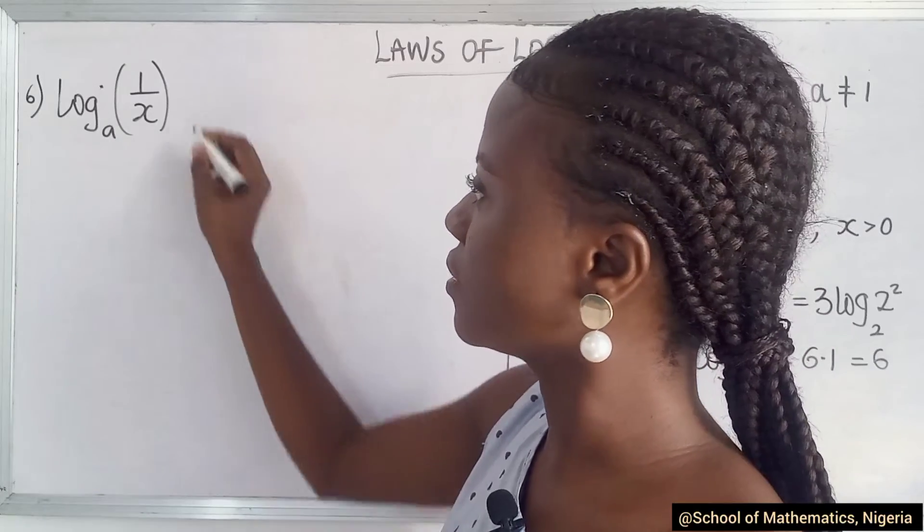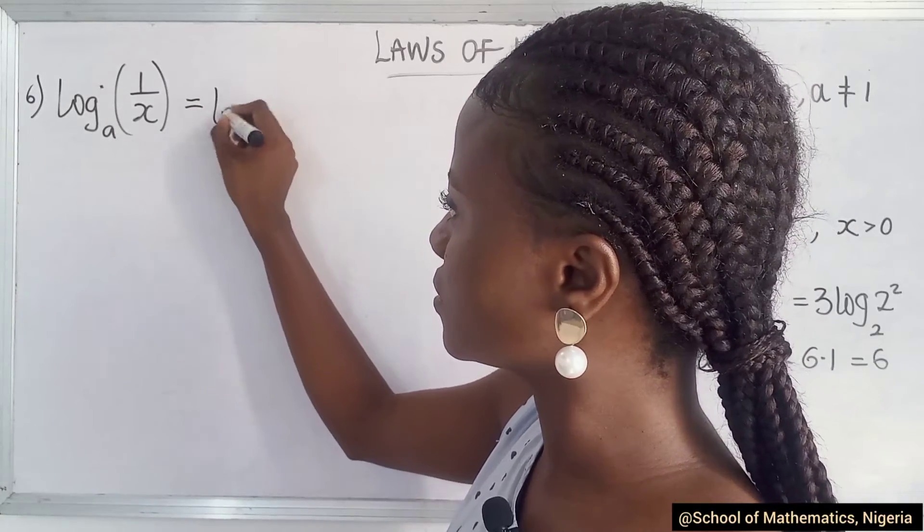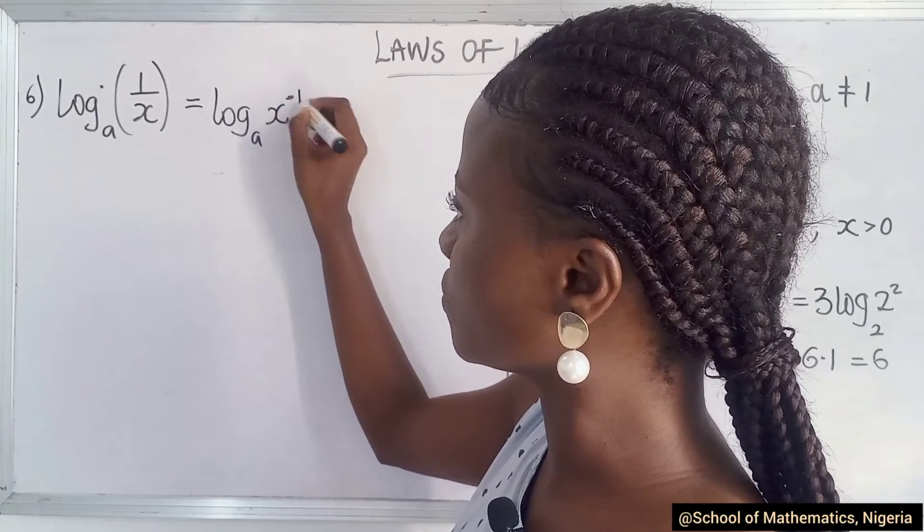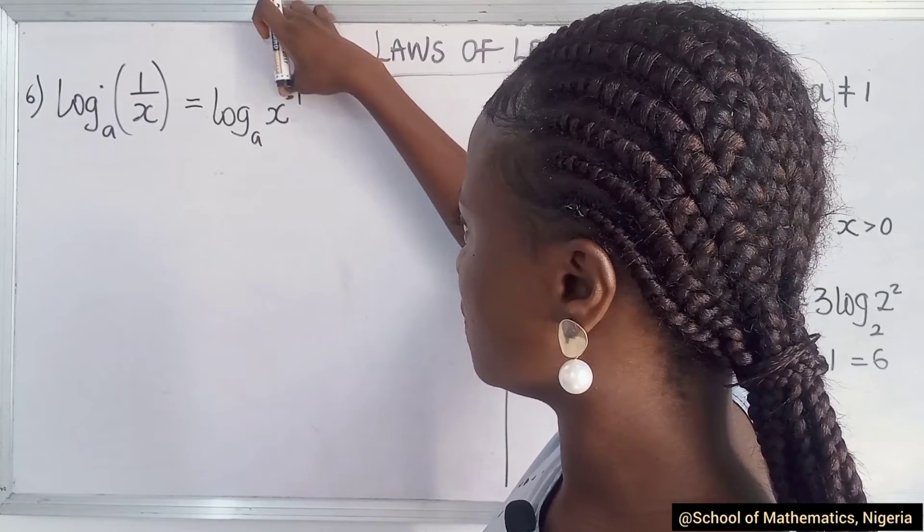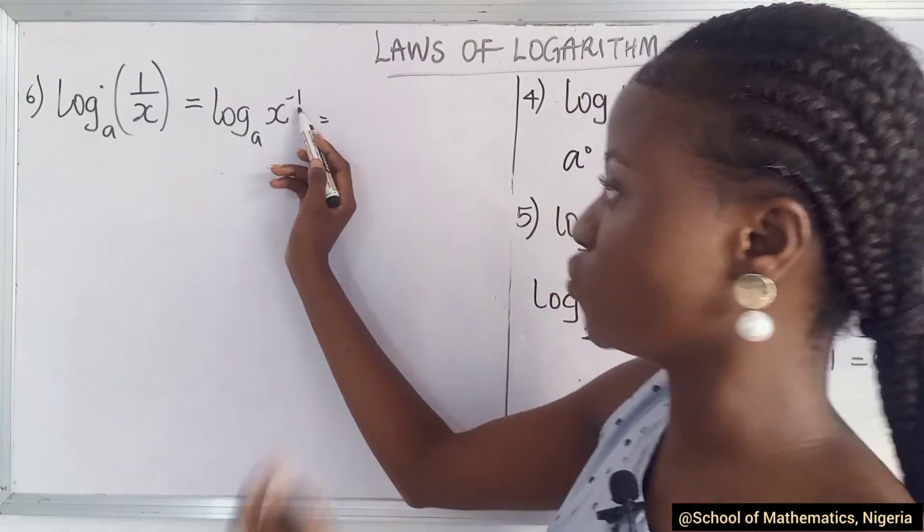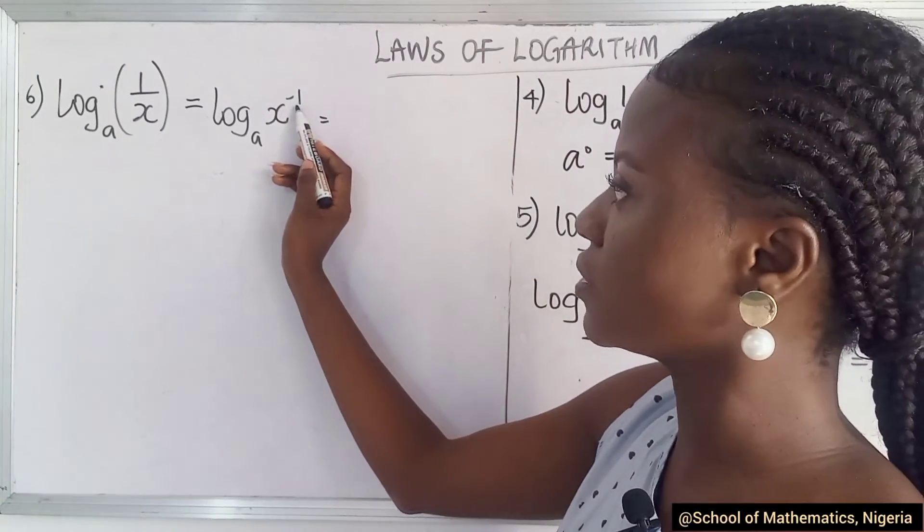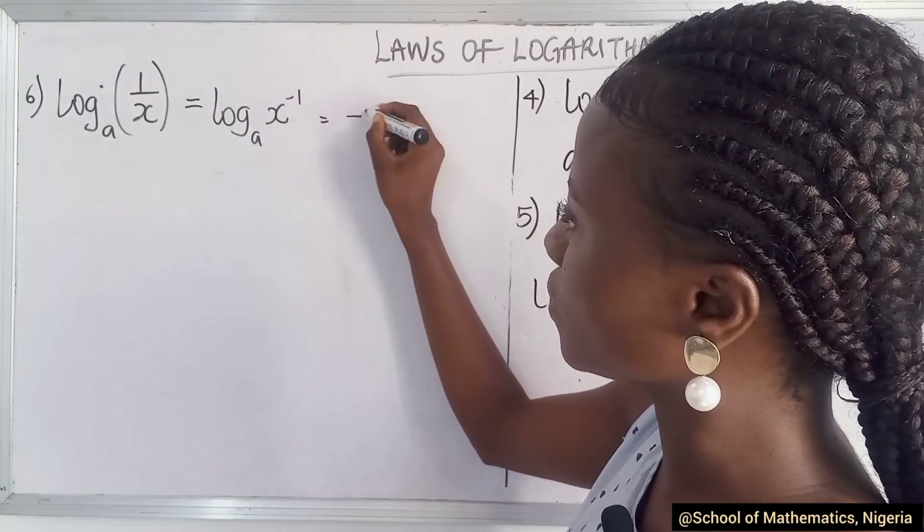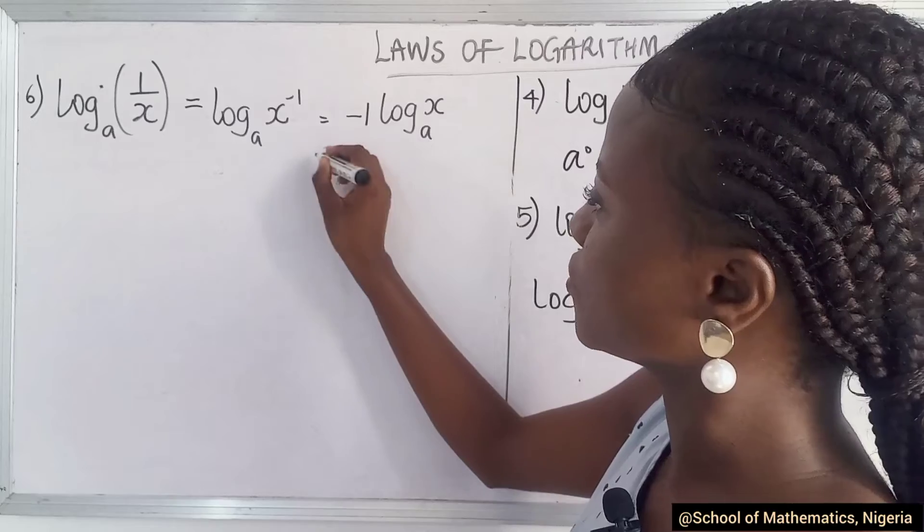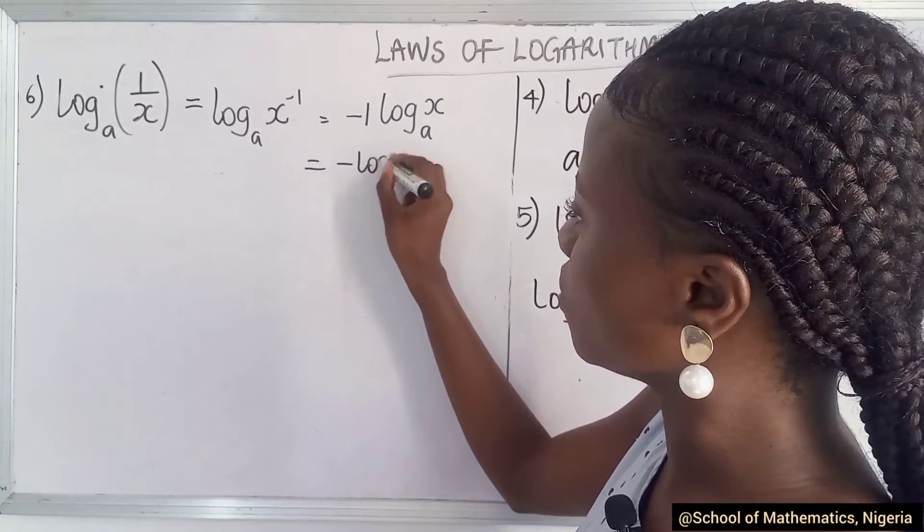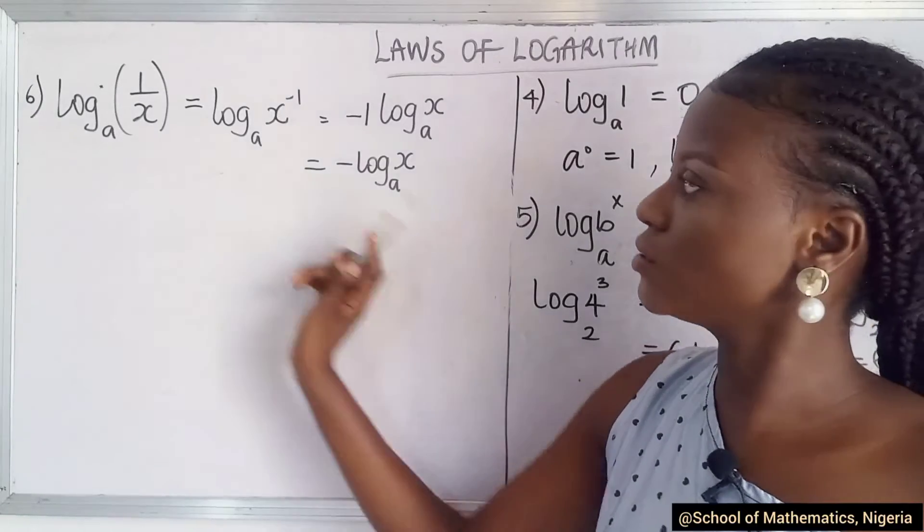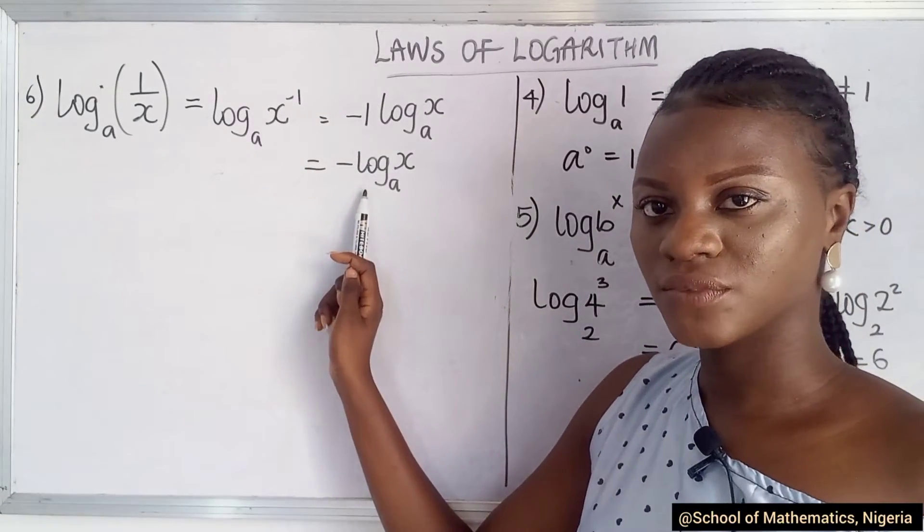So given a case like this, we know that this is the same as x raised to the power of minus 1 because of the inverse. So from one of the rules, which is something we just concluded with, we said the power goes forward, and then you have this. So this is the same as minus log a x. So whenever you have something like this, you know you can have this.